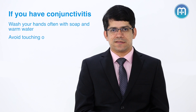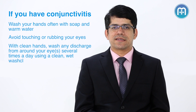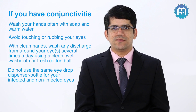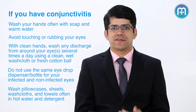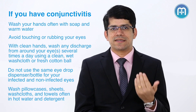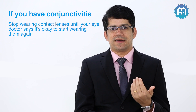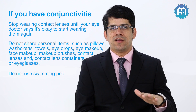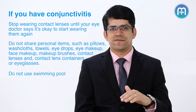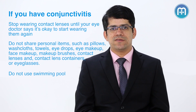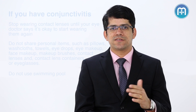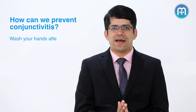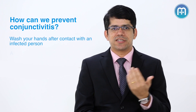Hygiene measures play a very important role in limiting the spread of infection from one person to another. It is a common myth that conjunctivitis spreads by just looking at or talking to a person, which doesn't really happen. The main reason for spread is through contact transmission — tears from the eye contain viral particles, and while touching the eye, if we touch a surface such as a table or chair, the virus tends to remain there. This then transmits to another person who unknowingly touches that surface and then rubs their eyes.